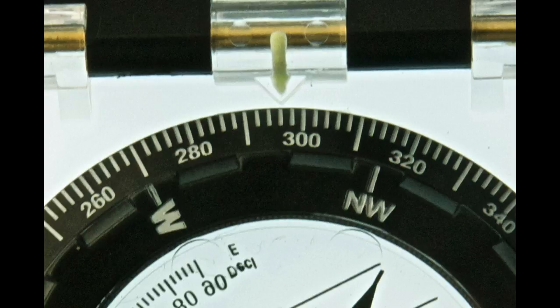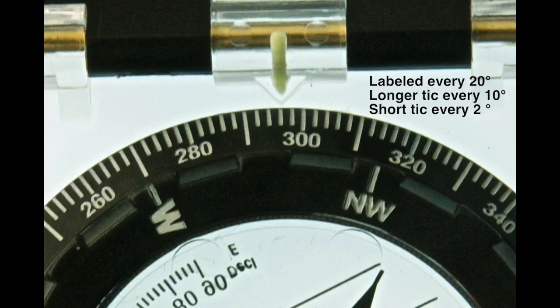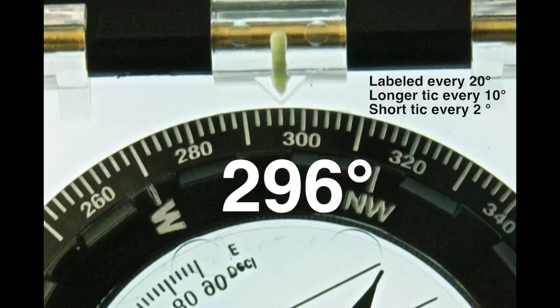Let's try reading some bearings. On this compass, the dial is labeled every 20 degrees, longer ticks every 10 degrees, and each short tick represents 2 degrees. The index mark on this compass is sharp, but it's hard to see because it's clear plastic. It does have a bit of phosphorescent paint, which helps. The bearing here is 296 degrees.